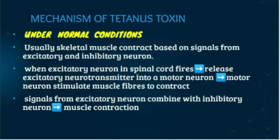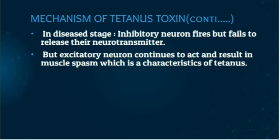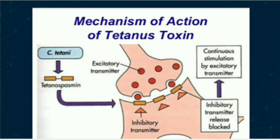In the diseased state, the inhibitory neuron fires but fails to release its neurotransmitter molecule. The excitatory neuron continues to act and results in muscle spasm, which is the characteristic feature of tetanus. In this diagram you can see the mechanism of action of tetanus toxin.